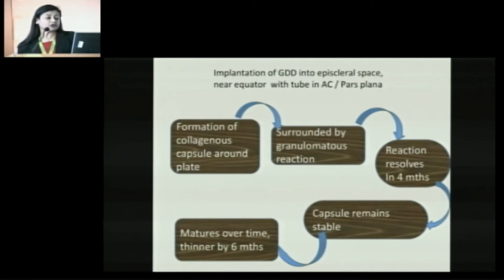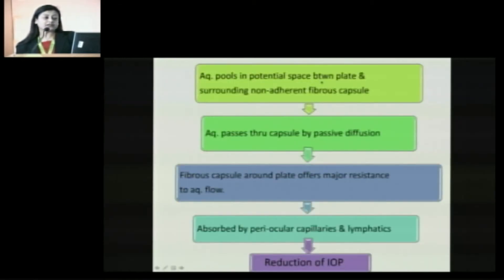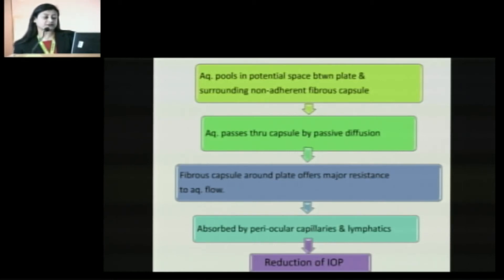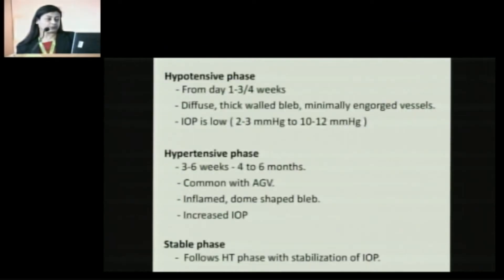What happens to the aqueous flow? The aqueous pools in the potential space which is formed between the plate and the capsule. It passes through the capsule by passive diffusion. This capsule is a major structure which offers resistance to aqueous flow and controls the IOP. It is gradually absorbed by the periocular capillaries and lymphatics, leading to reduction of IOP.